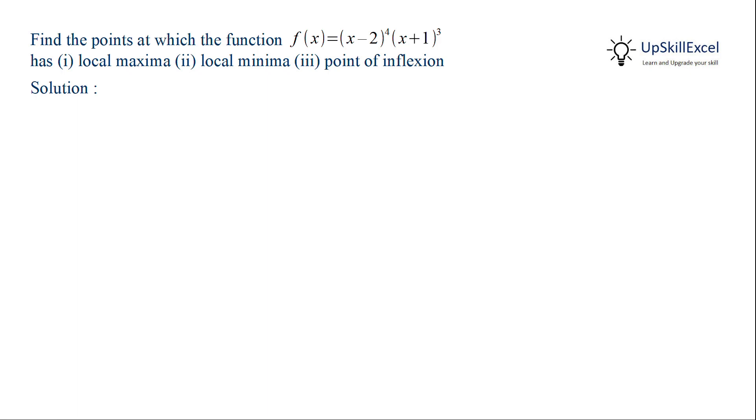Find the points of local maxima, local minima and point of inflection for the given function f(x) = (x - 2)^4 * (x + 1)^3.